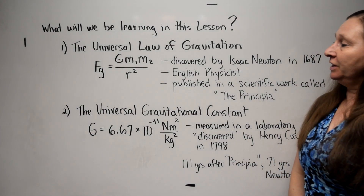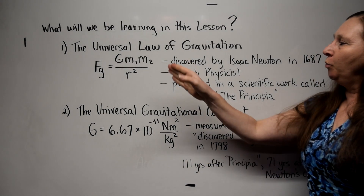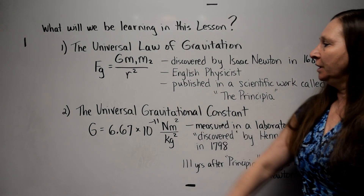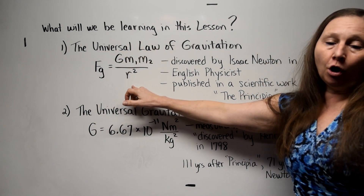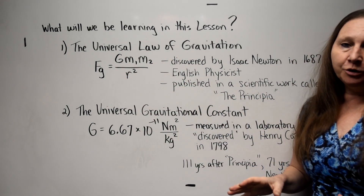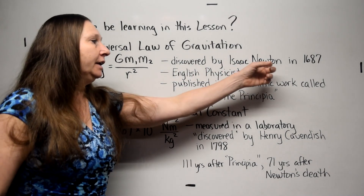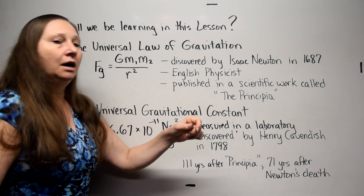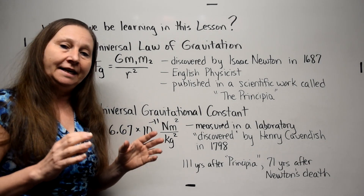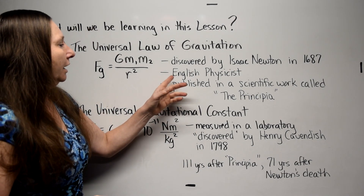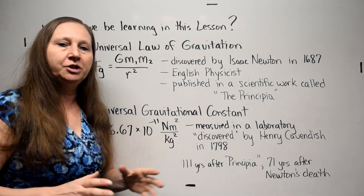So what will we be learning in this lesson? Number one, the universal law of gravitation: Fg equals Gm1m2 over R squared. We'll be talking about what all of those symbols mean in a few minutes. This law was discovered by Isaac Newton in 1686–1687. Other physicists were involved, but Isaac Newton was the man who put it all together and published. He was an English physicist, and what he published was an enormous scientific work called the Principia.